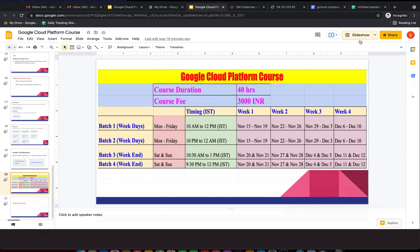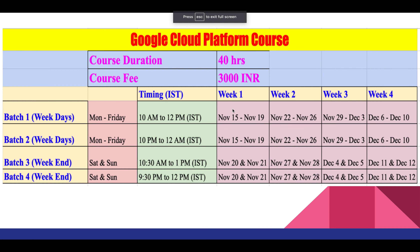The Google Cloud Platform course duration is 40 hours total and the course fee is 33,000. We have four batches. Batch 1 is weekdays, Monday to Friday, 10 AM to 12 PM IST, starting November 15 and ending December 10. The weeks run: November 15–19, November 22–26, November 29–December 3, and December 6–10. Batch 2 is also weekdays, Monday to Friday, but at night — 10 PM to 12 AM IST — starting November 15 and also ending December 10.